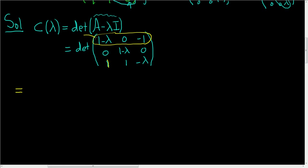We write down the first entry, which is 1 minus λ, and multiply by (−1) raised to the row plus column power. We're in row 1, column 1, so that's (−1)^(1+1). Then we multiply by the determinant of the matrix obtained by crossing out the first row and column, leaving us with the submatrix: (1−λ), 0, 1, −λ.